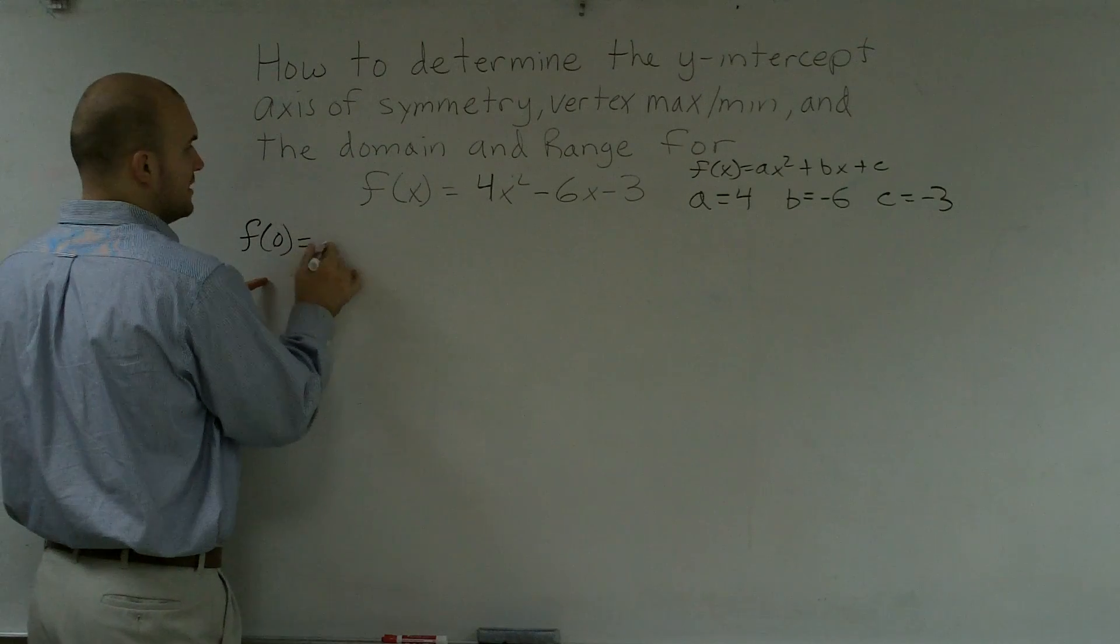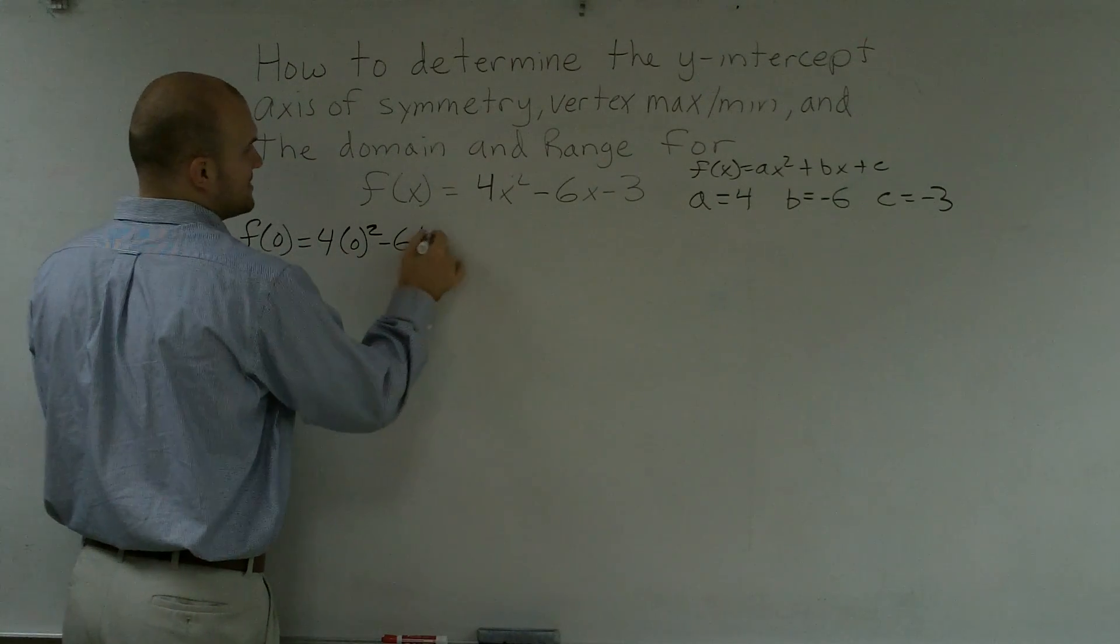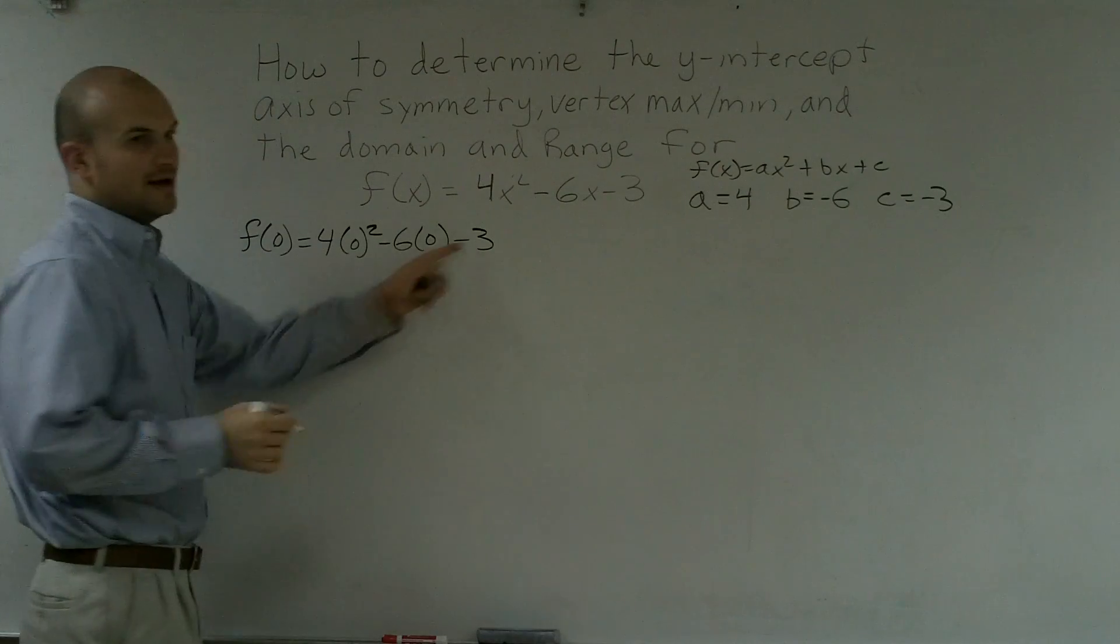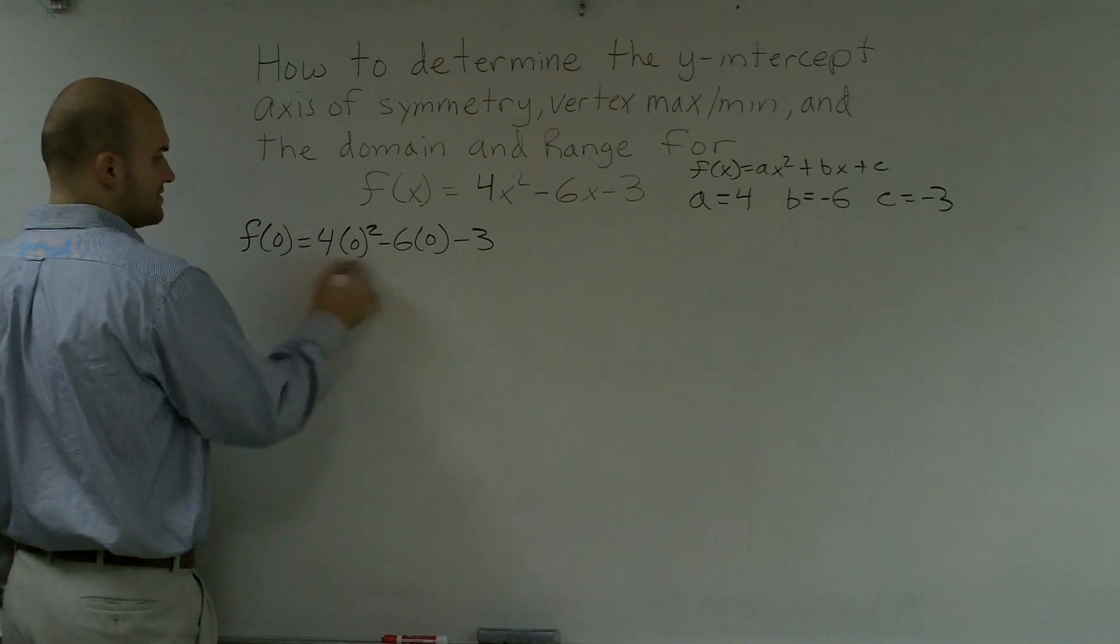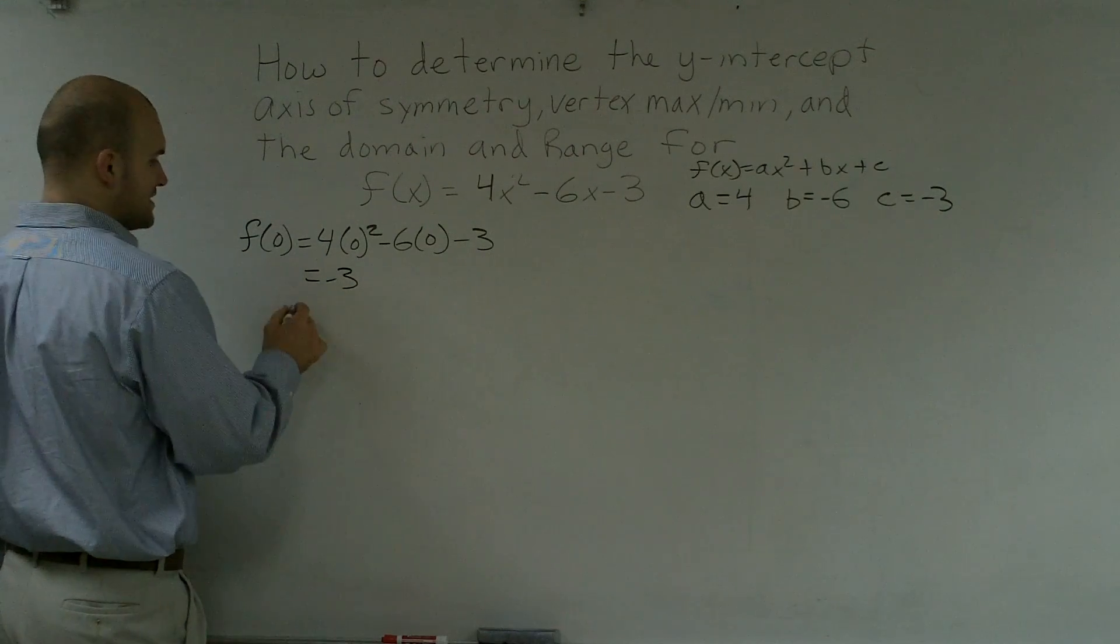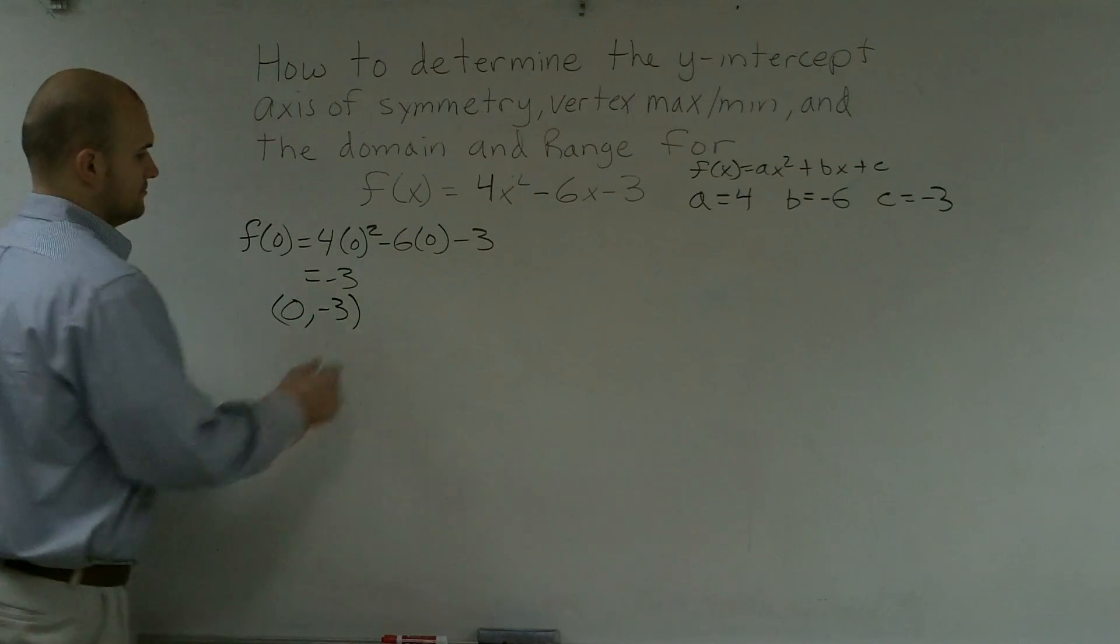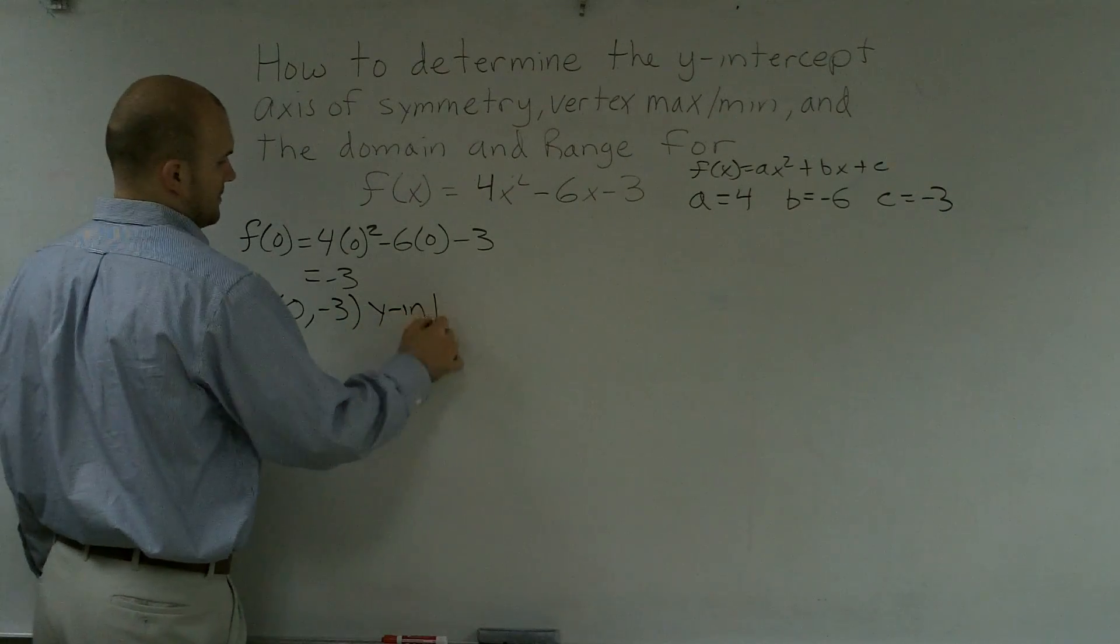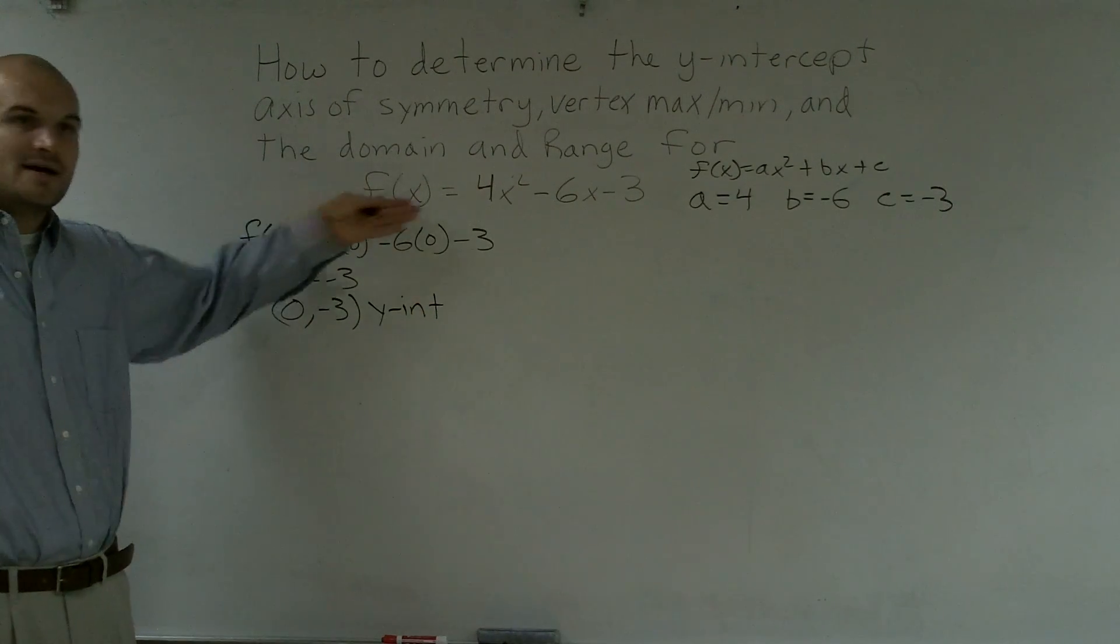Because I'm actually going to plug in 0 for x, equals 4(0)² - 6(0) - 3. And therefore, I notice that really quickly it's going to be f(0) = -3. Therefore, my y-intercept is at the point (0, -3). You just plug in 0 for x and you find it.